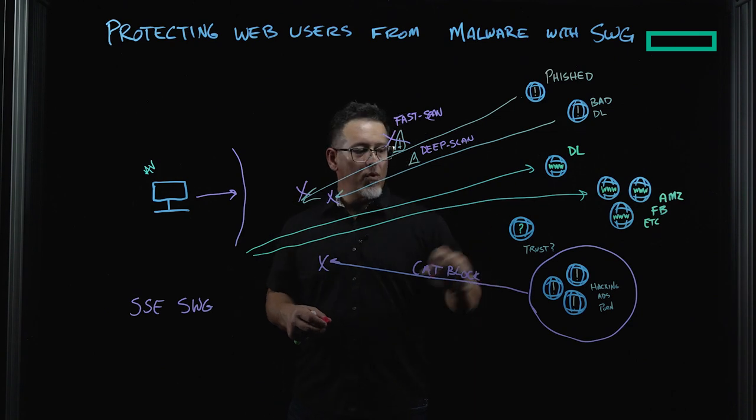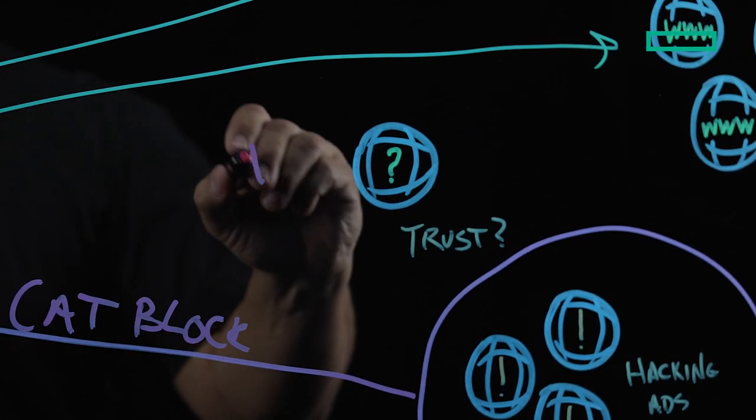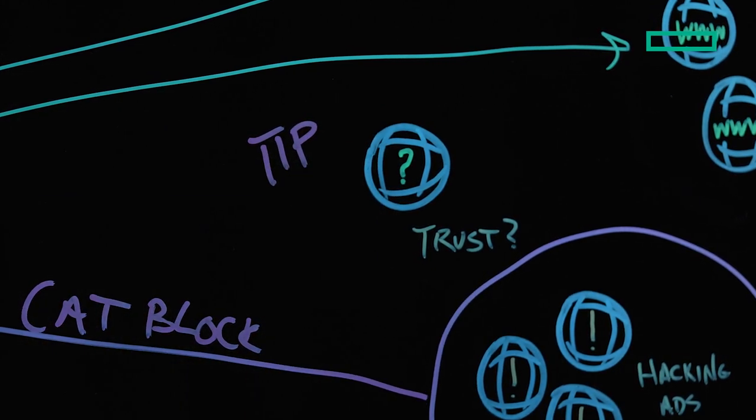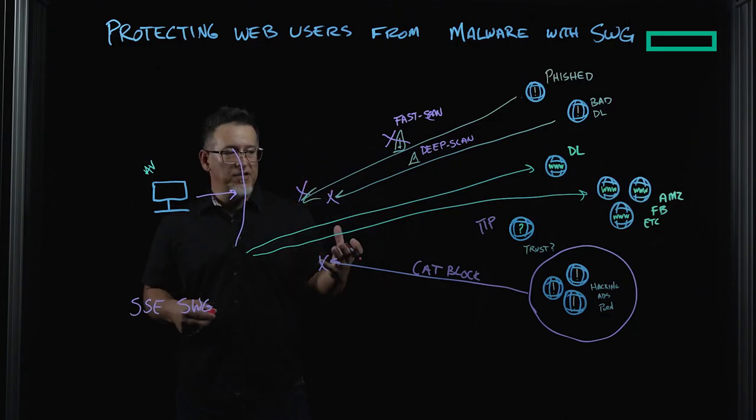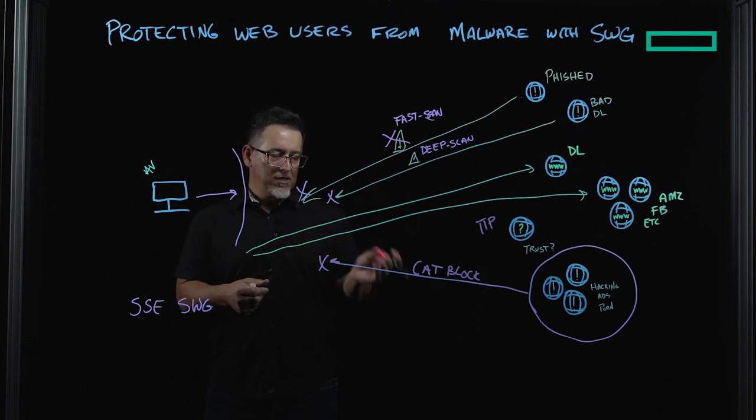And finally, for these sites that have changed in their trustworthiness, we use Threat Intel Protection, which adapts to and can block sites that have changed from being safe into being untrustworthy.